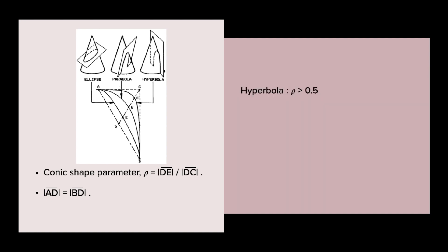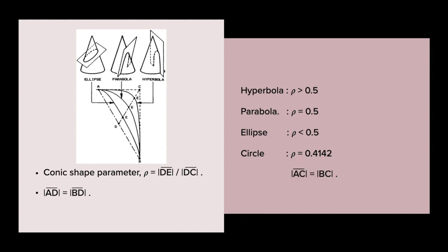The shoulder points are related to the parameter rho: for a hyperbola, rho is greater than 0.5; for a parabola, it equals 0.5; for an ellipse, it is less than 0.5; and for a circle, the conic shape parameter equals 0.4142. Also, AC equals DC.